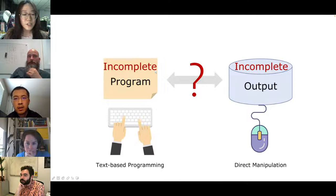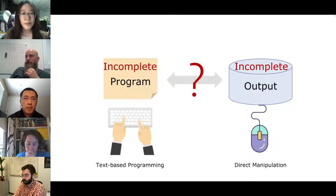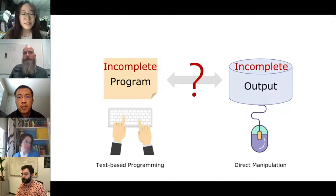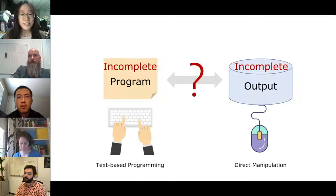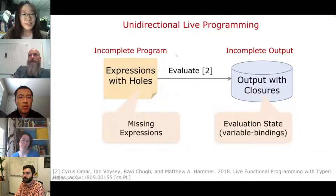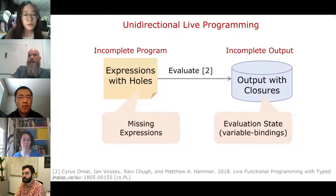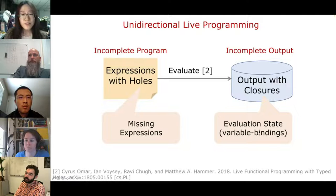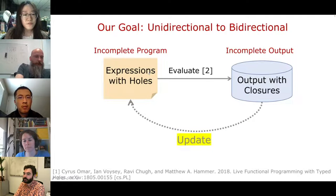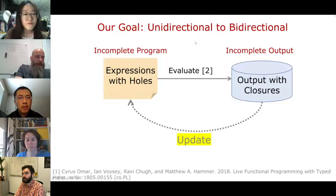These systems can not only allow developers to see continuous feedback by evaluating programs, but also allow them to directly manipulate the output to automatically synchronize the program. However, there is a big limitation: they cannot deal with incomplete programs where code blanks exist. In practice, developers tend to program in a way where they skip some parts by leaving code blanks. It would be practically useful if, even when the program is incomplete, developers could still directly manipulate the output and automatically synchronize the program.